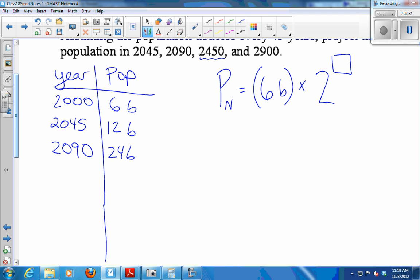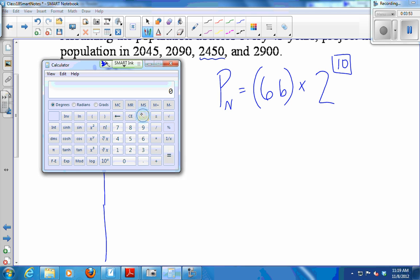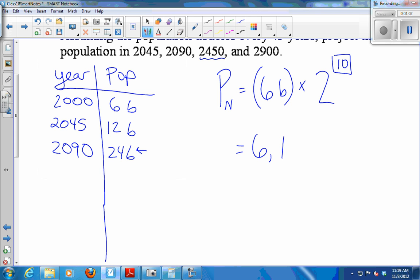But then we would have had a different starting amount. We would have used 24 billion as our starting. So 450 years, in 450 years, there are 10 sets of 45. So that means the population will double 10 times. So I put a 10 there. 6 billion times 2 to the 10. Let's see what that is. So that would actually be 6.144 trillion.